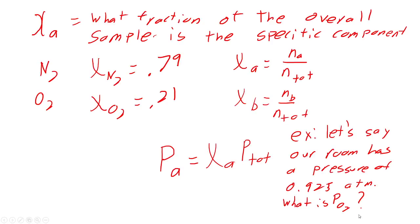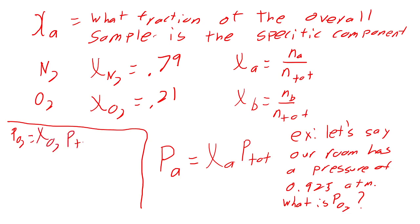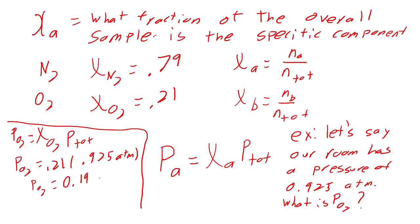Assuming oxygen is 21% and nitrogen is 79% of the air: pressure of oxygen equals mole fraction of oxygen times total pressure, which is 0.21 times 0.925 atmospheres. Note that mole fraction has no unit — moles divided by moles cancel — so we do 0.21 × 0.925 and get that the pressure of oxygen equals 0.19 atmospheres. We only have two sig figs in our mole fraction, so that's all we get.